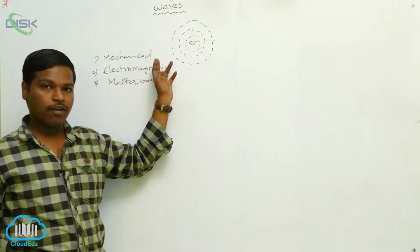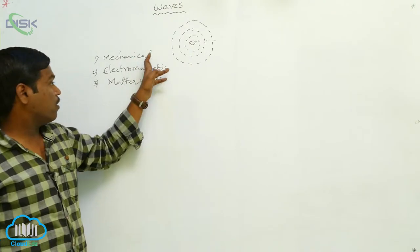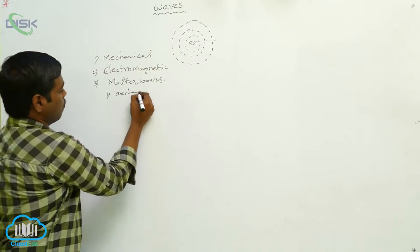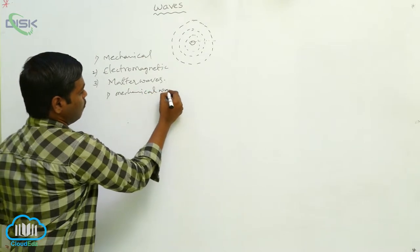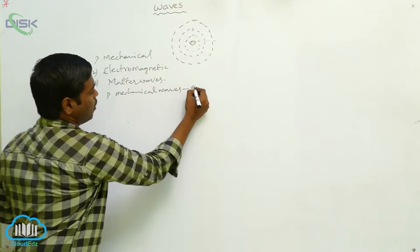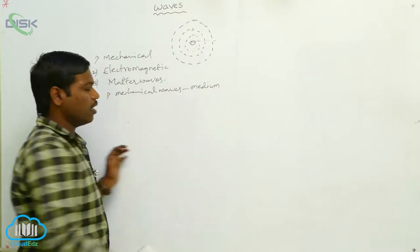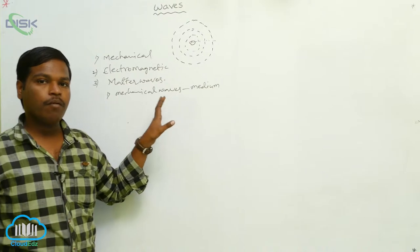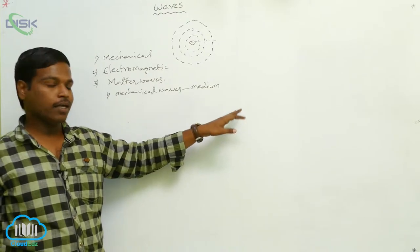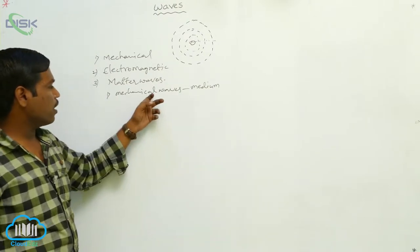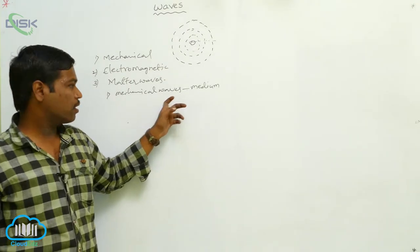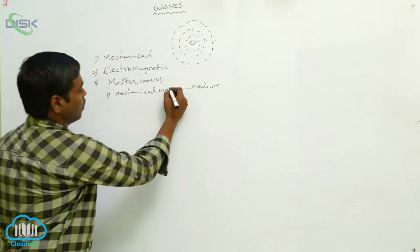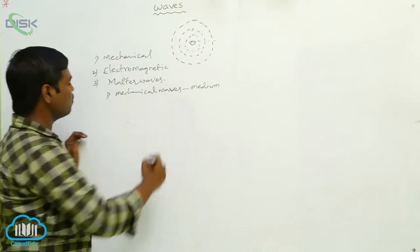For traveling, mechanical waves require a medium — compulsorily, a material medium is required to travel the waves from one point to another point. In mechanical waves, we have two types: transverse waves and longitudinal waves.